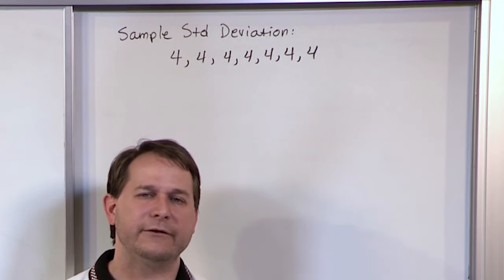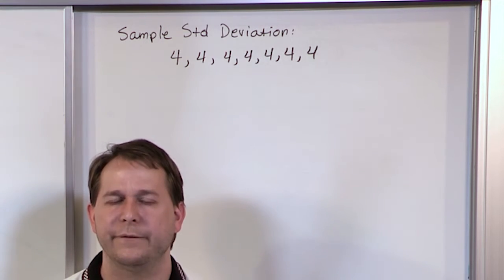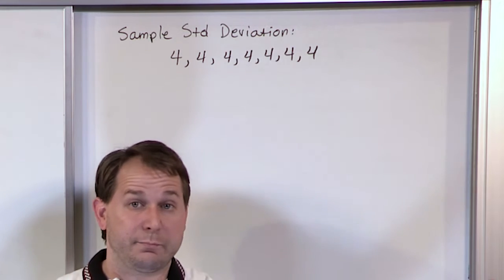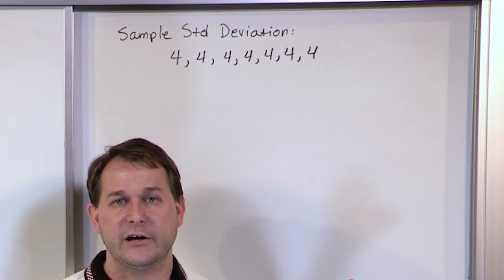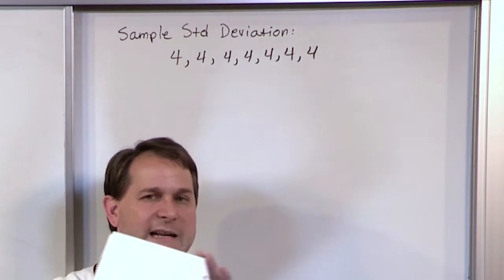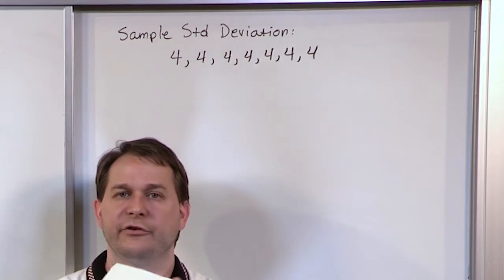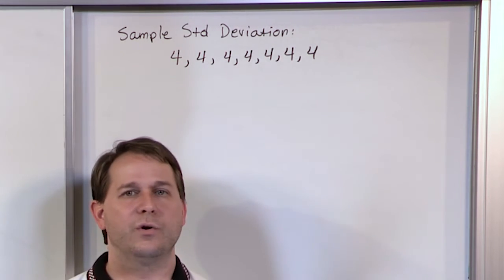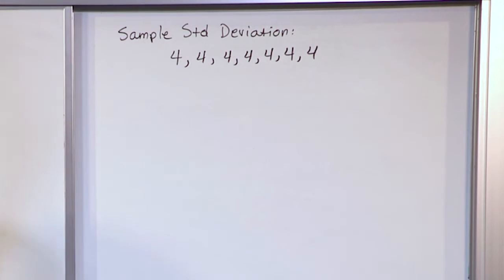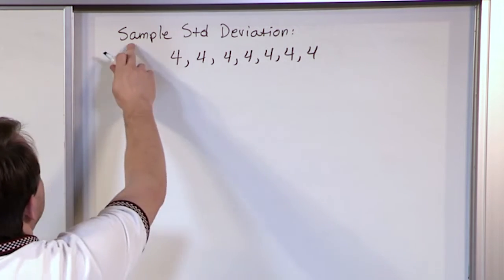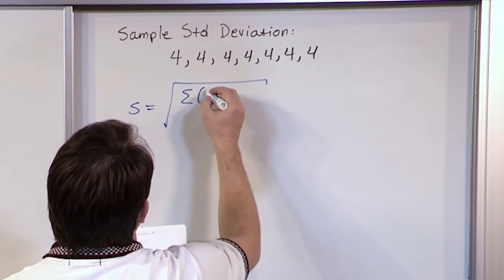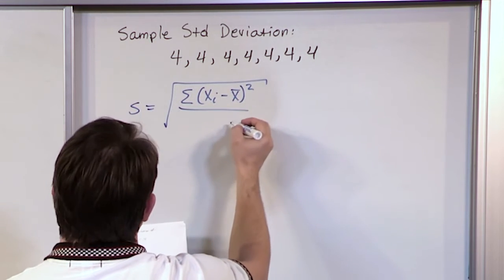The standard deviation tells you how spread out the data is around the mean. All the values in the data set are the same, so there is no spread. Literally, everybody is on top of everybody. There is no spread, no variation, no variance, no dispersion. You can almost just circle the answer, but it's important to show how the calculation reflects that.